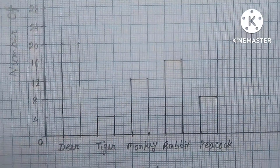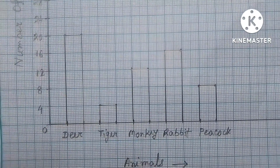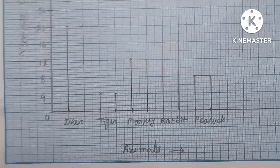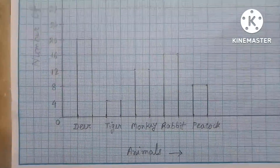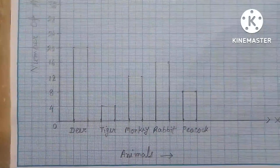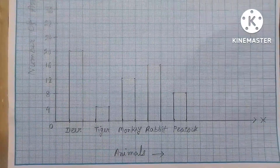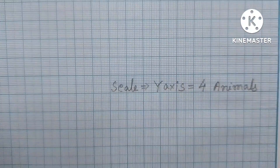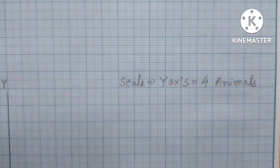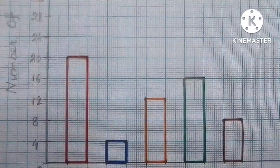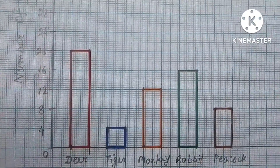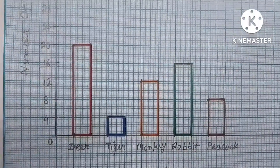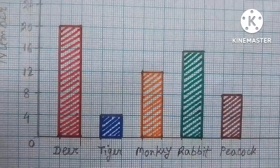My bar graph is ready. Now to make it attractive, you can use different colors, border color, or you can shade it using different color pencils or sketch pens.